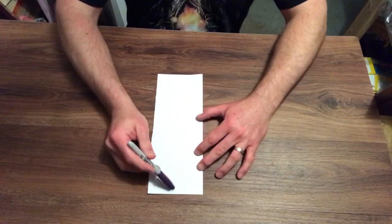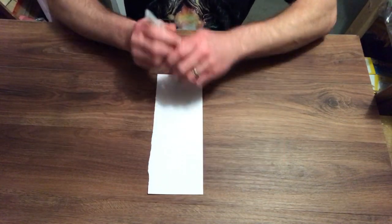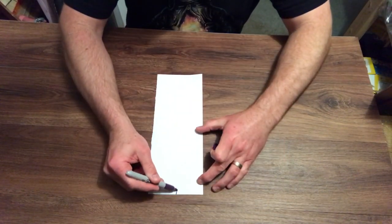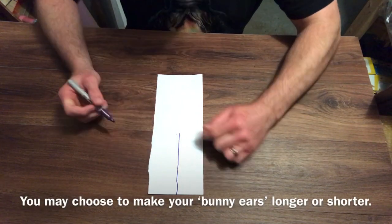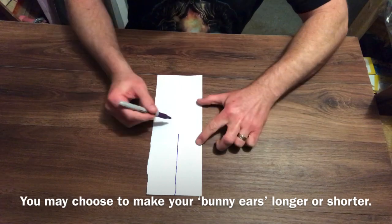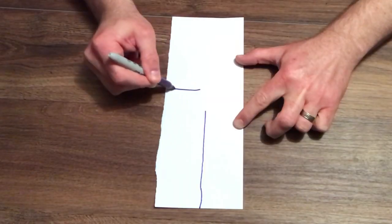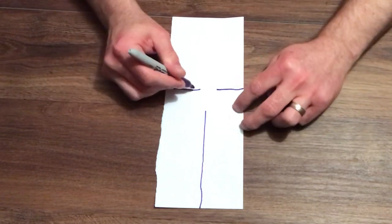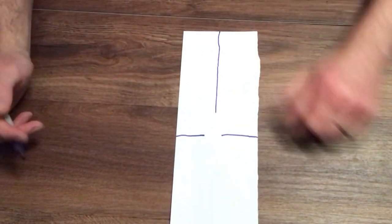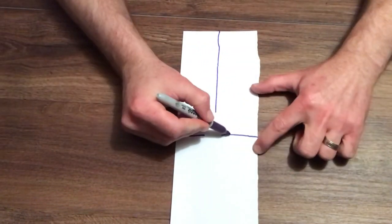And then just going to make three lines. One goes down the middle and those are the bunny ears. I'm going to make that almost halfway and then down below there, going to go like this. That's a little bit too far there but you get the idea.